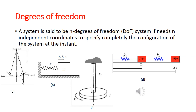In another figure, there are two masses: one mass attached through a spring of stiffness k1, and another mass attached to the first through a spring k2. Here we have two masses and two independent coordinates, so this is an example of two degrees of freedom.